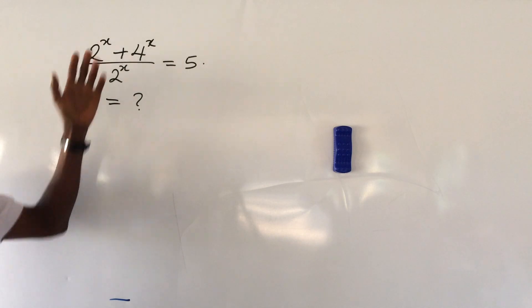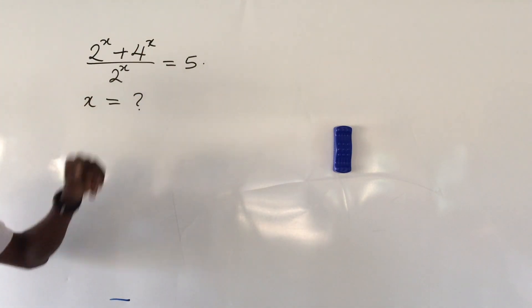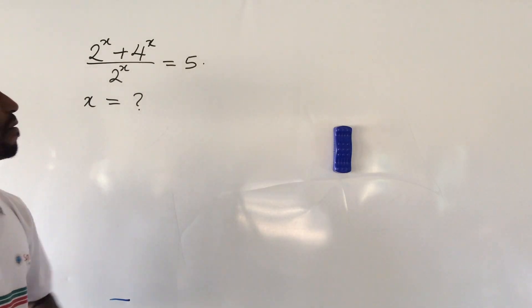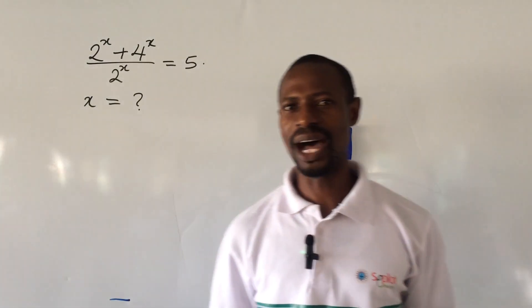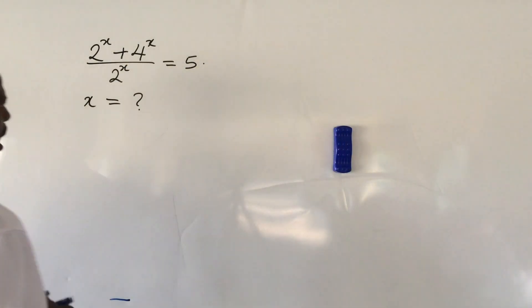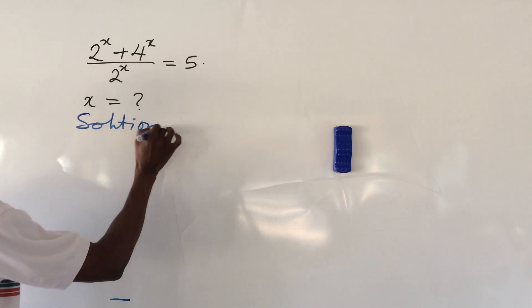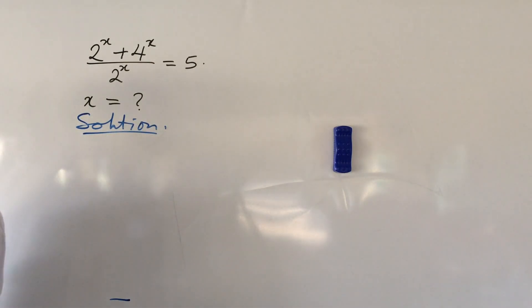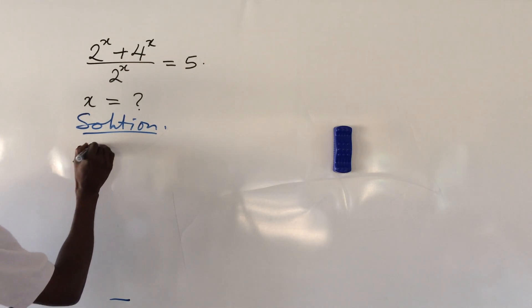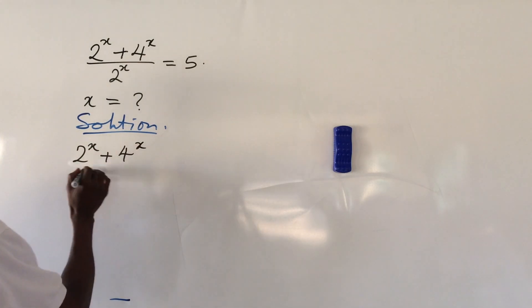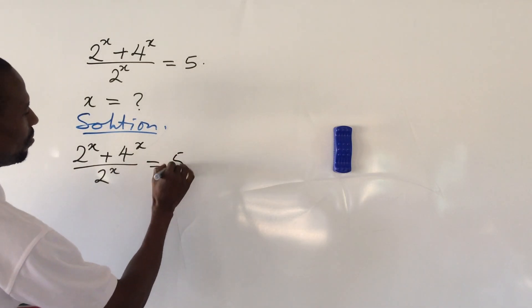The question says: 2 to the power of x plus 4 to the power of x, all over 2 to the power of x, equals 5. What would be the possible value or values of x? We now take our solution.